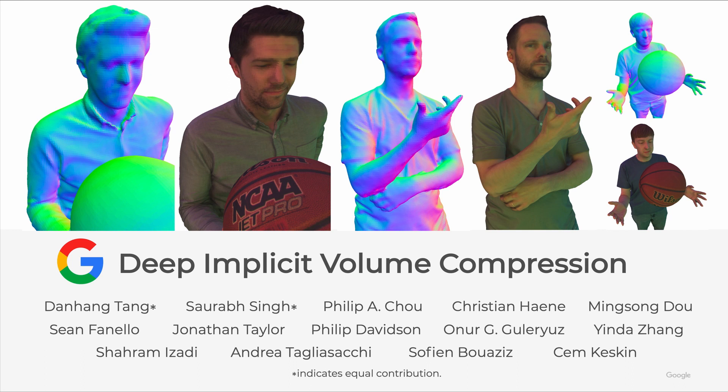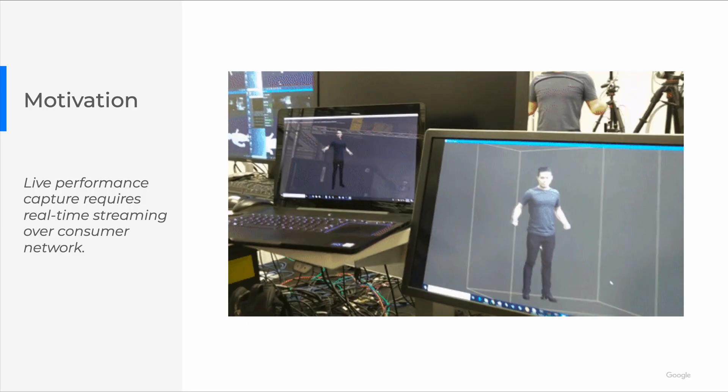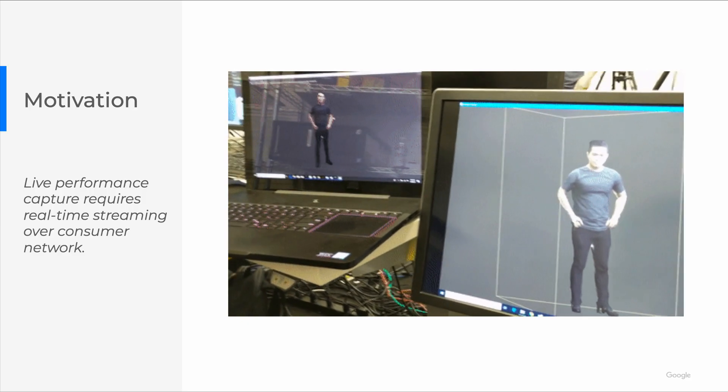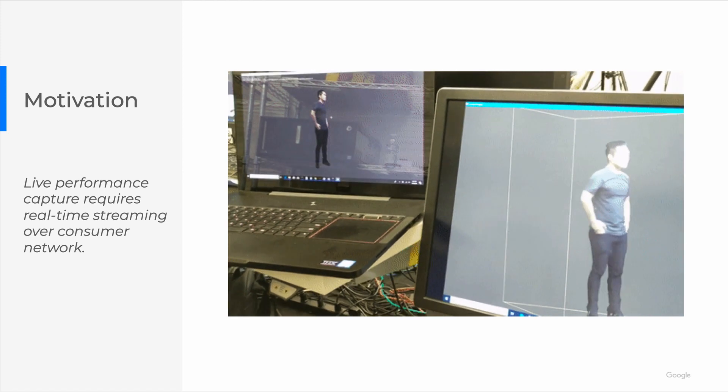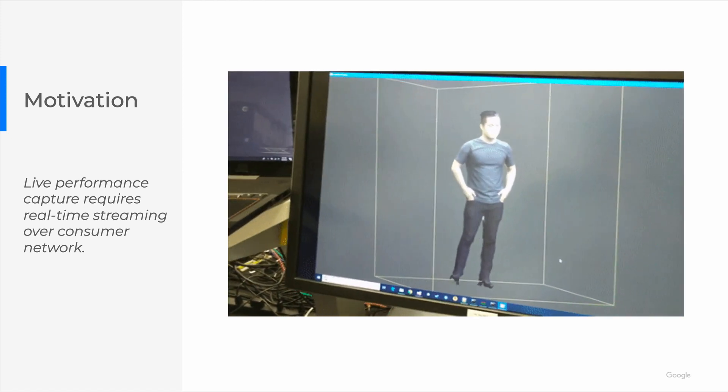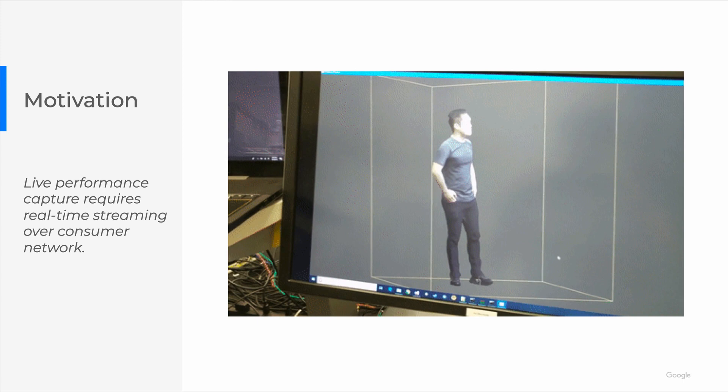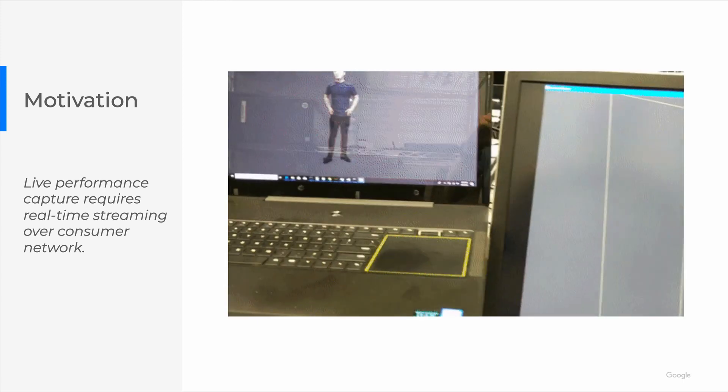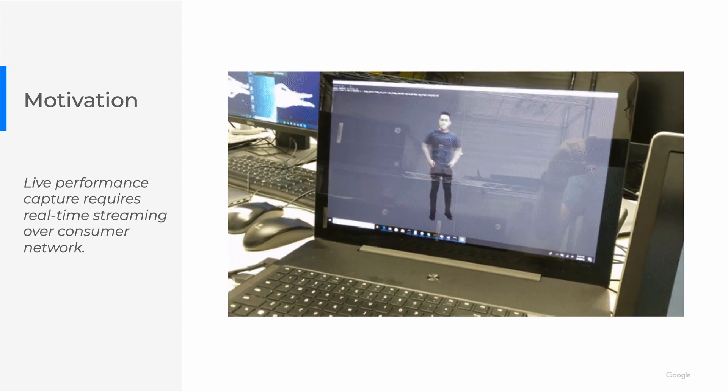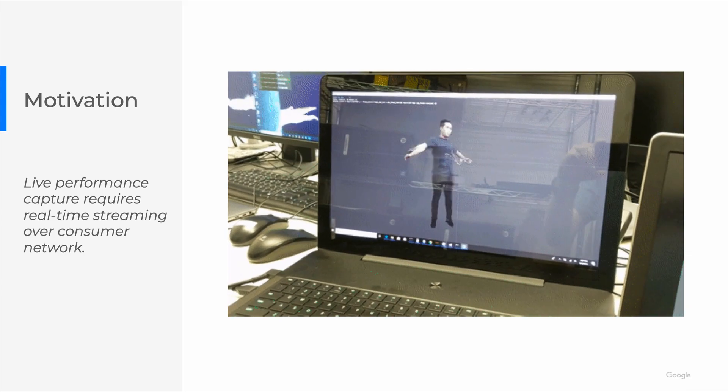We present deep implicit volume compression, motivated by the problem of compressing live performance capture. As you can see in this video, a subject is being reconstructed into 3D models by this capturing rig. The geometry and texture are then compressed and streamed over WiFi to this laptop. This requires a 3D compression rate that is similar to traditional 2D video compression.